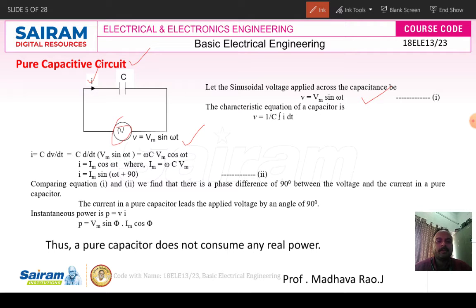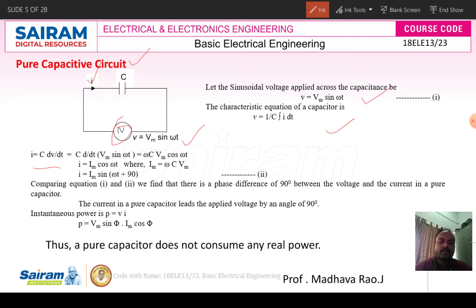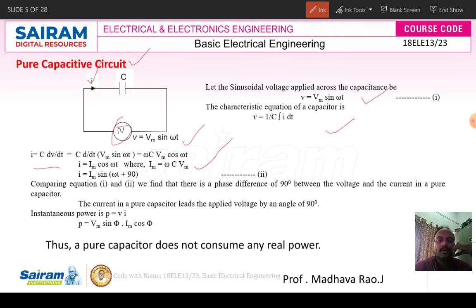Since V = Vm sin(ωt), to get the current equation we use I = C dV/dt. Substituting Vm sin(ωt) and differentiating, we get Im = ωCVm. Therefore, I = Im sin(ωt + 90°). Note that in the inductive circuit it was (ωt − 90°), whereas here it is (ωt + 90°).